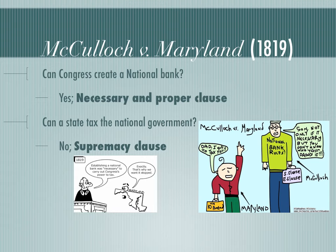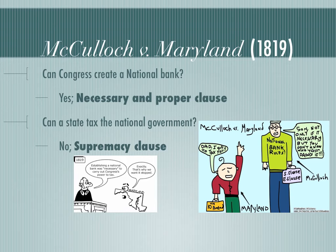Could Congress create the national bank? Nowhere in the Constitution does it state Congress can make a national bank. However, the answer is yes — Congress can create a national bank. The reason is the Necessary and Proper Clause. The Supreme Court believed it was necessary and proper because some of Congress's other powers were to tax, borrow money, and coin money. The Court said it is reasonable and necessary that if Congress can do those things involving money, they are allowed to have a national bank.